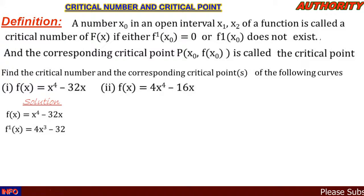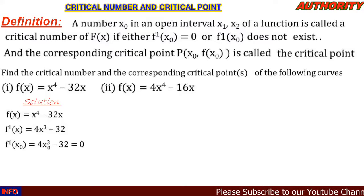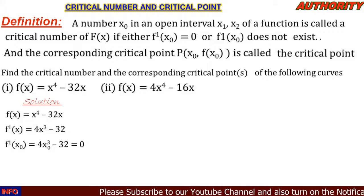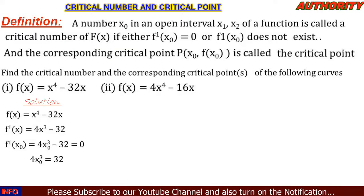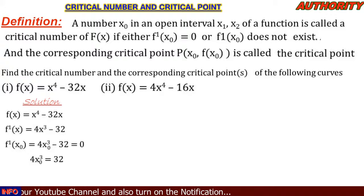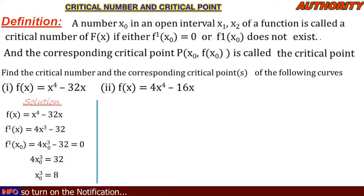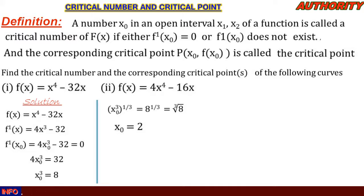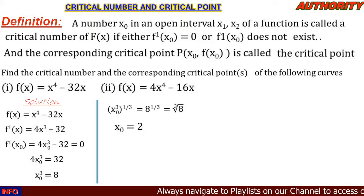Step two: replace x with x-naught and equate to zero. So f prime of x-naught equals 4x-naught³ minus 32 = 0. Solving: 4x-naught³ = 32, divide both sides by 4, giving x-naught³ = 8. Taking the cube root of 8 gives x-naught = 2.